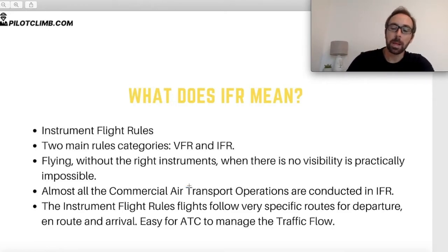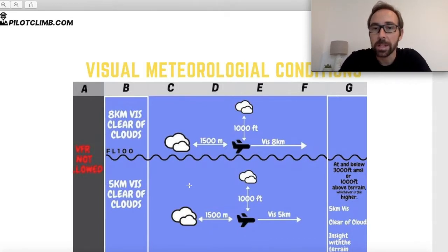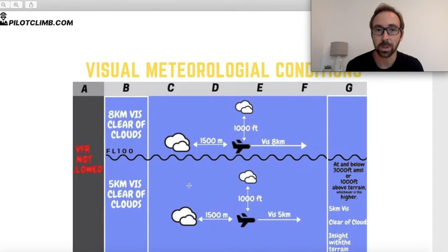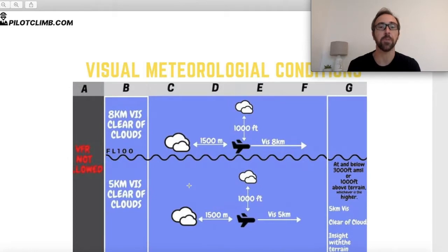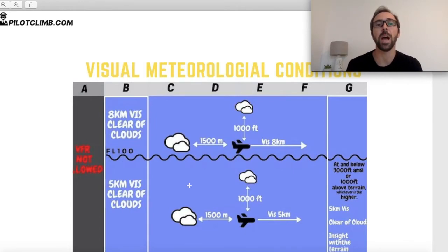Next, let's talk about VMC and IMC. Visual meteorological conditions (VMC) are the conditions that allow pilots to fly VFR. If you're a VFR pilot without an instrument flight rule rating, you can only fly when VMC conditions exist. An IFR pilot, however, can fly either VFR or IFR under VMC. But when you are in instrument meteorological conditions (IMC), you can only fly under IFR. So if you are a VFR pilot and the day has IMC conditions, you have to stay on the ground.